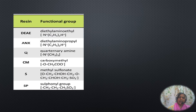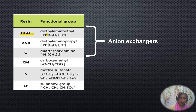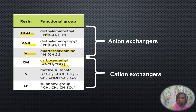Examples of anion and cation exchangers: DEAE (diethylaminoethyl) has a positive charge, so it binds to negatively charged particles and is an anion exchanger. Similarly, ANX and quaternary amine (Q) are anion exchangers. Carboxymethyl has a negative charge, so it binds to positively charged particles and is a cation exchanger. Methyl sulfonate and sulfonyl groups also have negative charges and hence are cation exchangers.